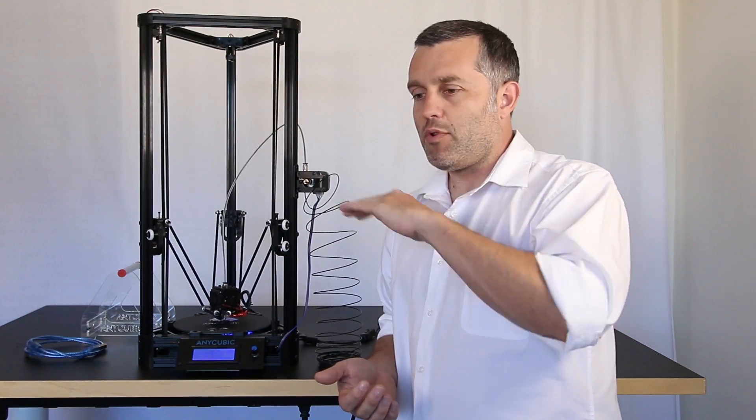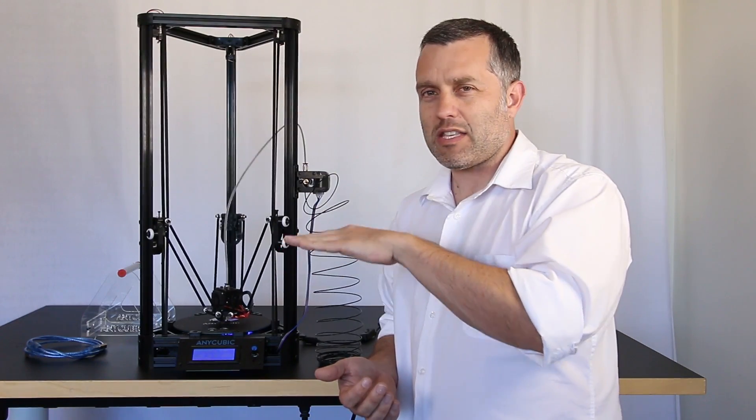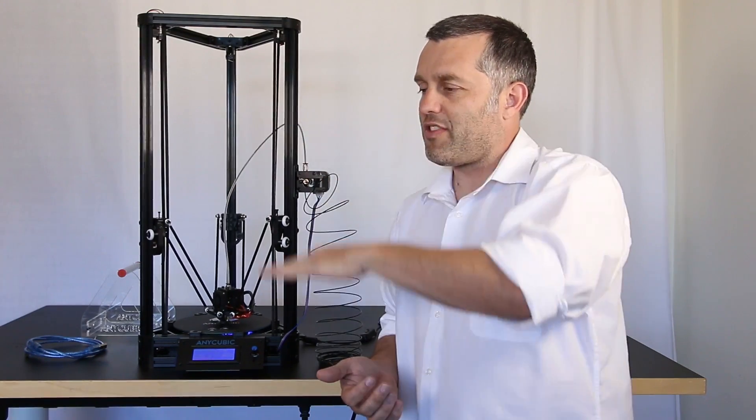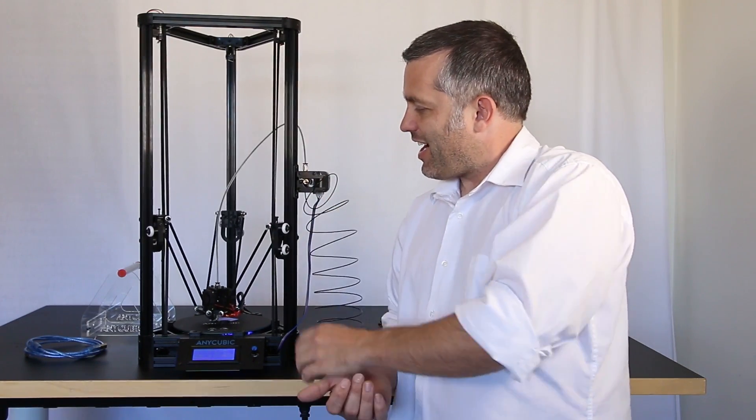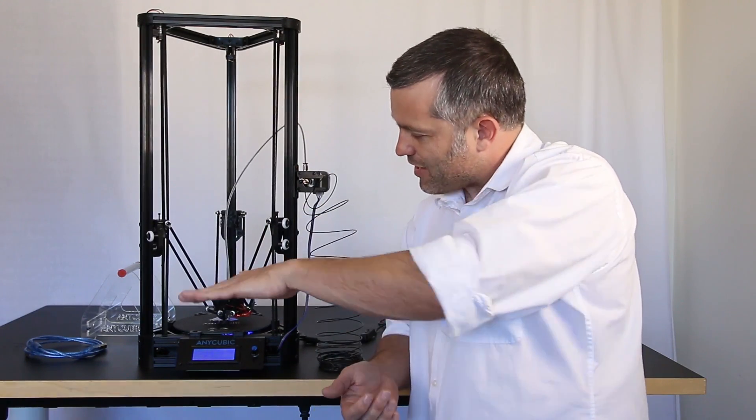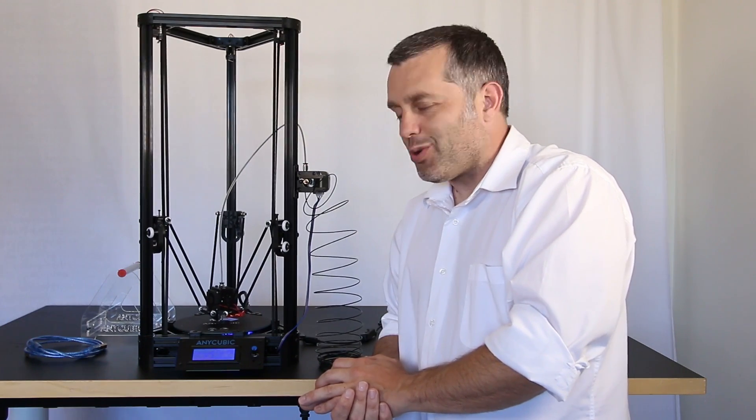Cartesian printers move in X, Y, and Z, so they sort of make sense. You move this way, you move this way, or you move this way. But with this printer you have these three legs that go up and you have these arms which swing, and yet somehow the end effector manages to stay parallel to the bed. It's kind of cool.